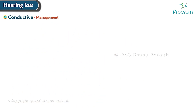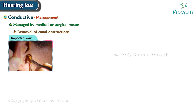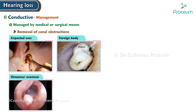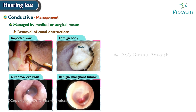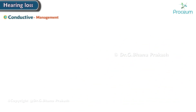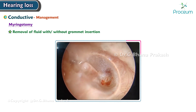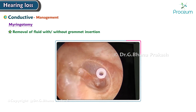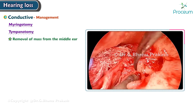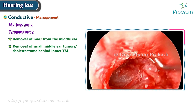Most cases of conductive hearing loss can be managed by medical or surgical means. Management includes removal of canal obstructions like impacted wax, foreign body, osteoma, exostosis, benign or malignant tumors, keratotic mass, or meatal atresia. Fluid is removed through myringotomy with or without grommet insertion. Mass from the middle ear is removed by tympanotomy, including removal of small middle ear tumors or cholesteatoma behind the intact tympanic membrane.